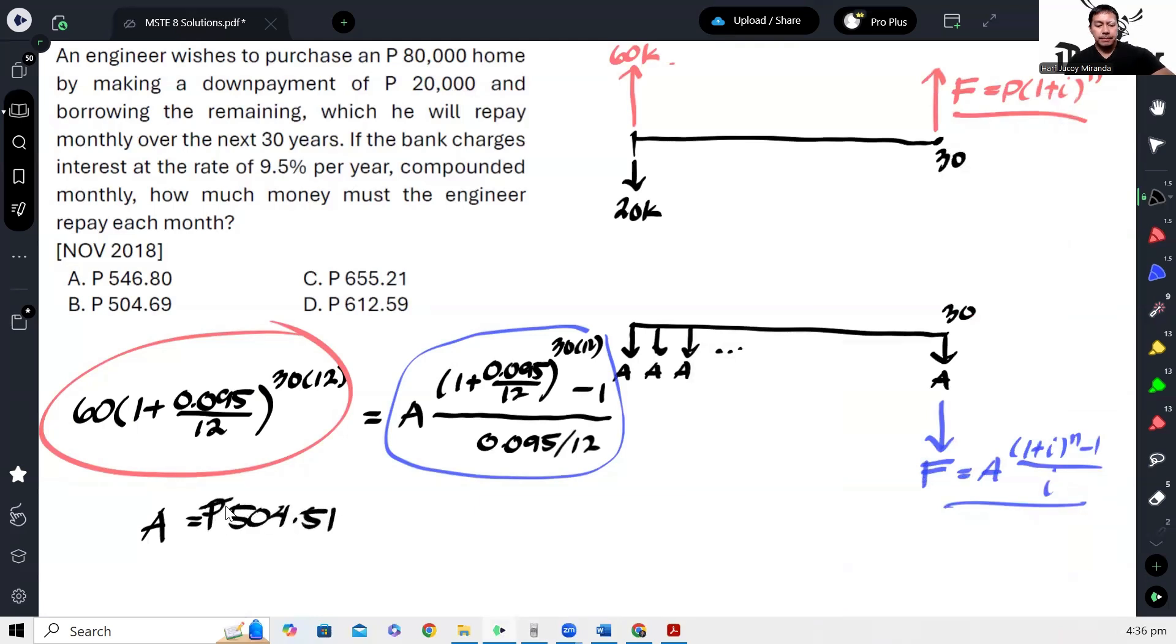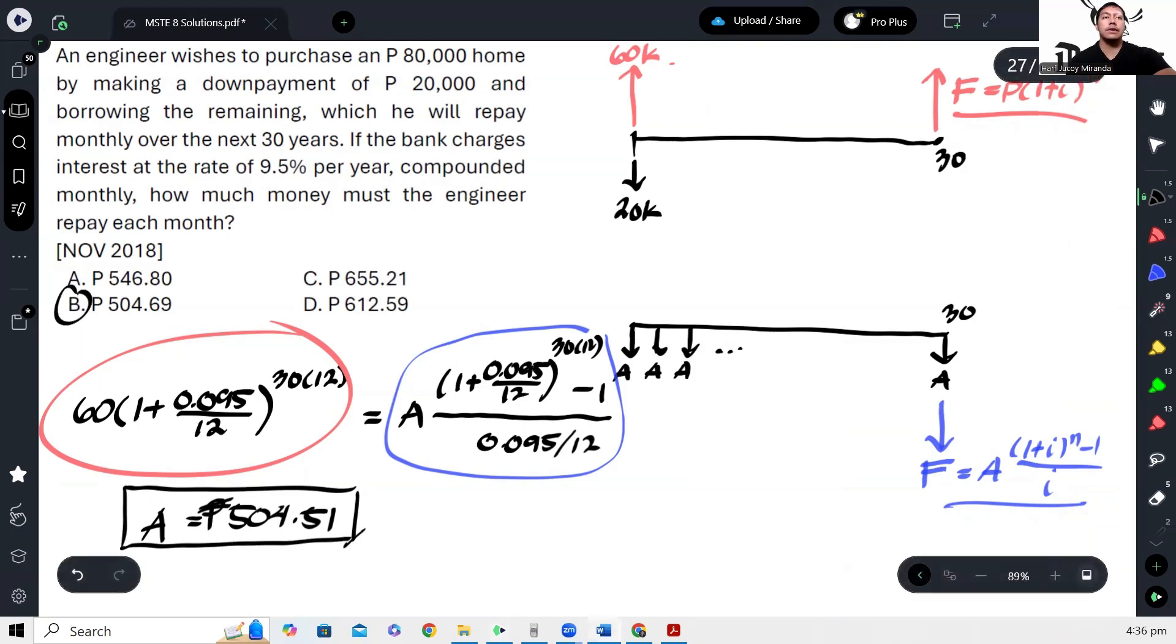So meron lang discrepancy. Kasi inexact po yung sagot, or yung computation. And that gives us letter B. So that's how you solve this problem.